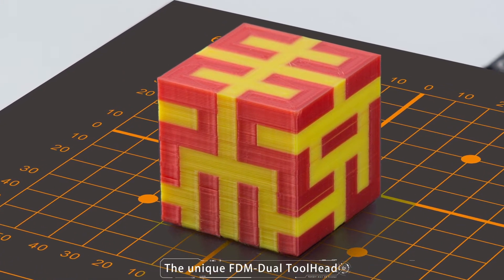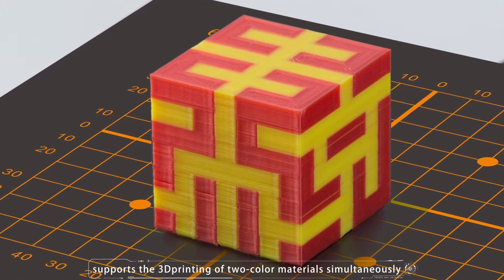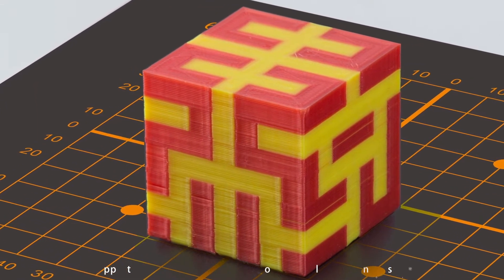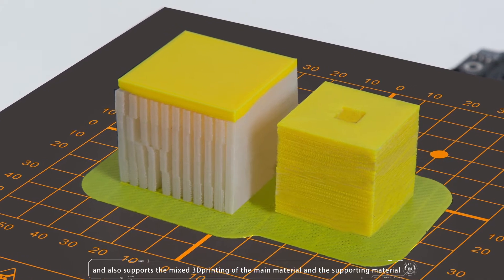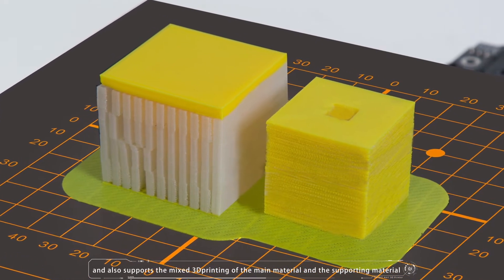The unique FDM dual toolhead supports the 3D printing of two color materials simultaneously, and also supports the mixed 3D printing of the main material and the supporting material.